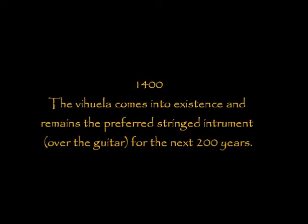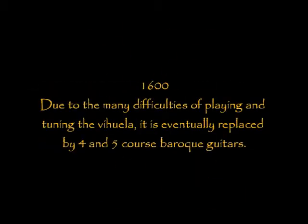In 1400, the viola came into existence and remained the preferred stringed instrument over the guitar for the next 200 years. By 1600, due to the many difficulties of playing and tuning the viola, it was eventually replaced by four and five chorus baroque guitars.